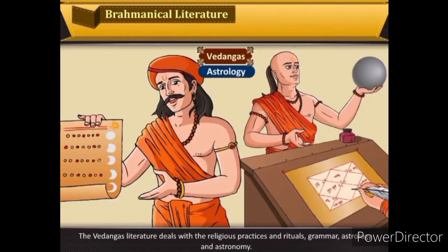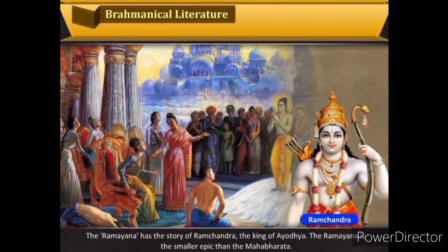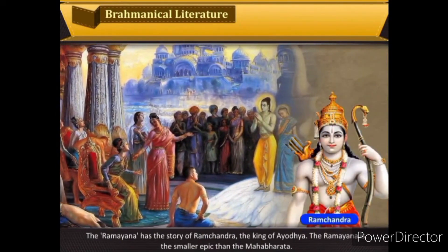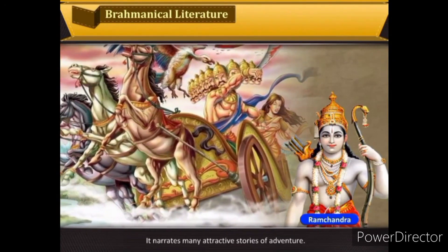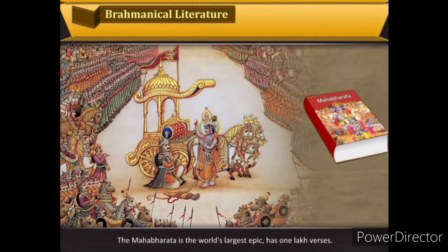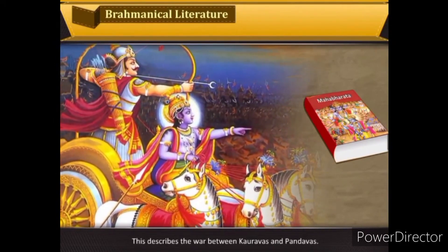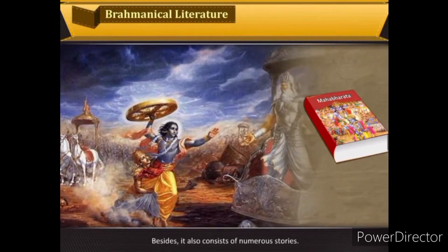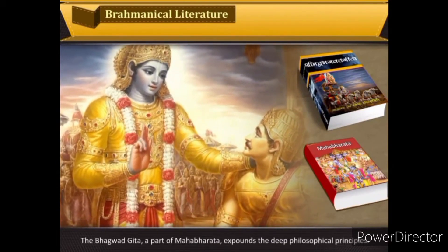The Ramayana and the Mahabharata are two great Indian epics. The present form of these epics can be traced back to the second century. The Ramayana has the story of Ramchandra, the king of Ayodhya, and narrates many attractive stories of adventure. The Mahabharata, the world's largest epic, has one lakh verses and describes the war between the Kauravas and Pandavas, along with numerous other stories.